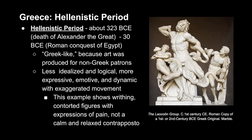Next we move into the Hellenistic period, which occurred about 323 BCE — around the death of Alexander the Great — to about 30 BCE, when the Roman conquest of Egypt happened. 'Hellenistic' means Greek-like, because the art was mainly produced for non-Greek patrons. The work was less idealized and logical, and more concerned with being expressive, emotive, and dynamic, with exaggerated movement. This sculpture represents Laocoon, who warned the city of Troy about the Trojan horse. This upset the Greek deities, who sent serpents to attack him as punishment. The figures are writhing and contorting in pain — not in the calm, relaxed contrapposto we previously saw.